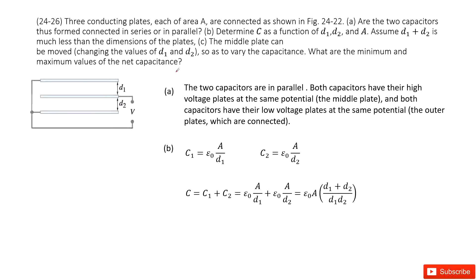So we look at this system. It tells us there are three conducting plates, each of them has area A, and they are separated by D1 and D2. The first part: are the two capacitors connected in series or parallel?